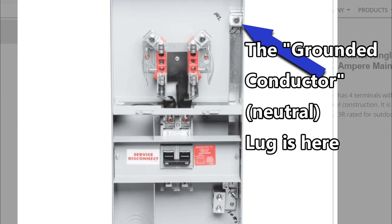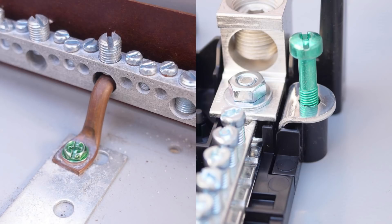Grounded conductor in that article refers to the neutral. So I hope that helps you to understand the differences and similarities between bonding straps and bonding screws and what a main bonding jumper is. Thanks. I hope this video was helpful.